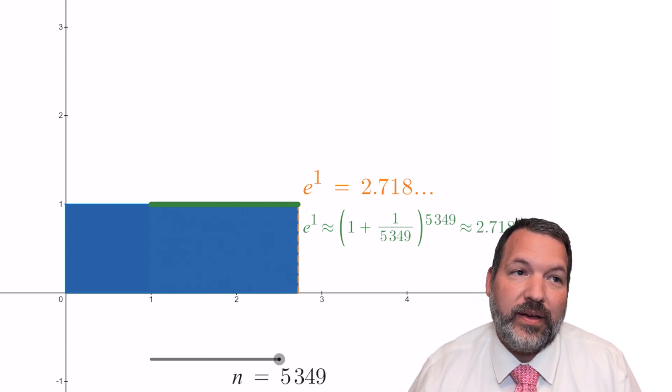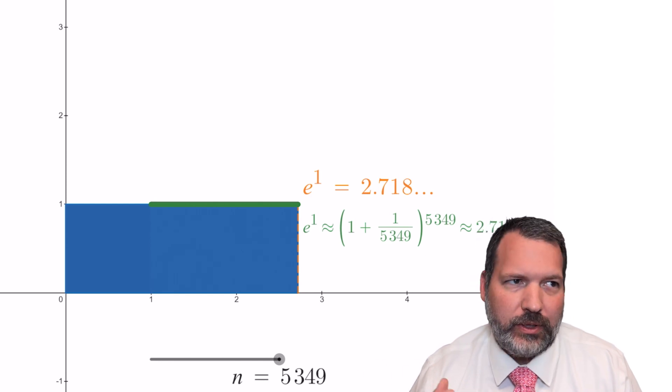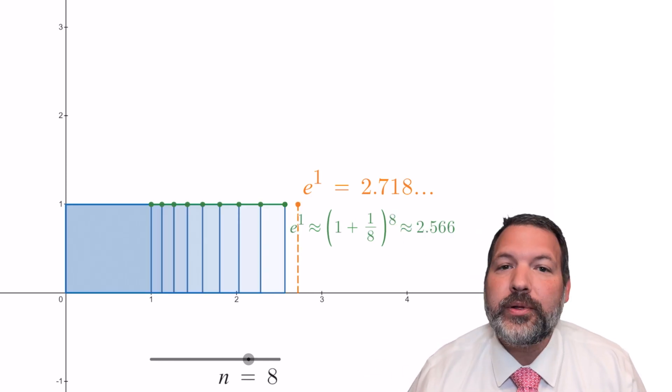Actually, 2.7, 1828, 1828, 4589, and so on. It's that number that we call E.